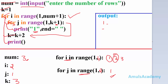With i equal to two, control enters the inner for loop again. Now k value is three, so the range is one to k plus one, that is one to four, giving output one, two, three. j takes the first value of one, goes to the print statement, prints the star, and end is space so control moves forward. Control returns to the j-th for loop.